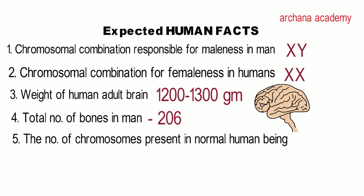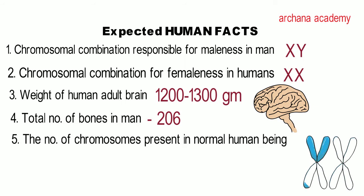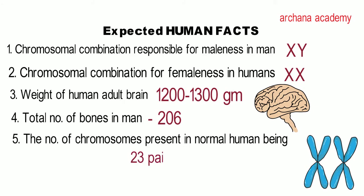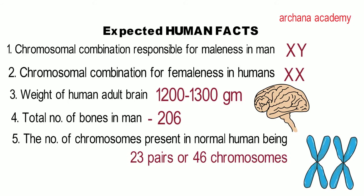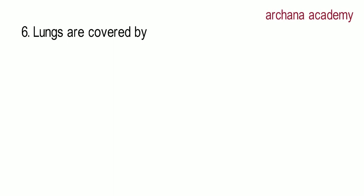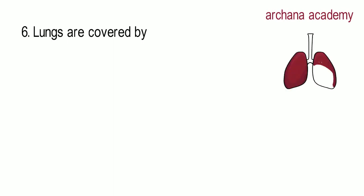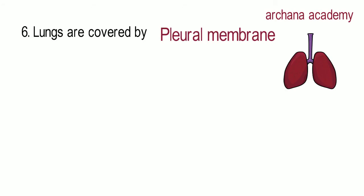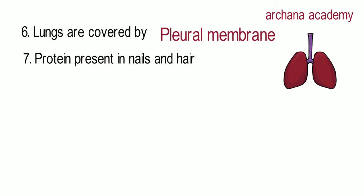The number of chromosomes present in a normal human being is 23 pairs, meaning 46 chromosomes. In a diagram, each pair of chromosomes shows an X-shape structure. Next, lungs are covered by a protective covering — both lungs have a double membrane protective covering known as the pleural membrane.